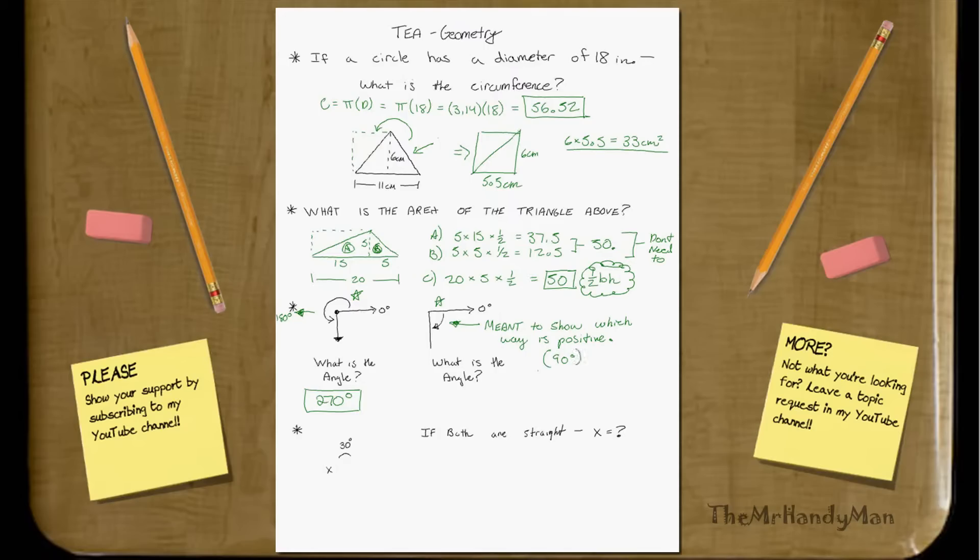But if they're following the universal math rules, or standards, or whatever you want to call it, then this would actually be negative 90 degrees. And technically, the same thing as our 270 that we had before.